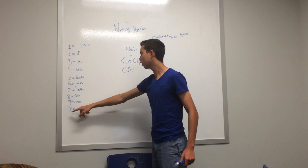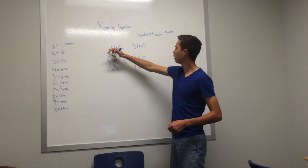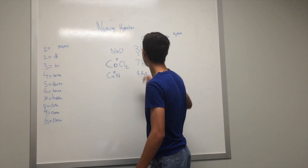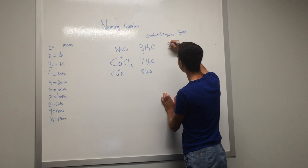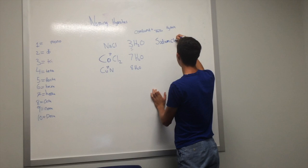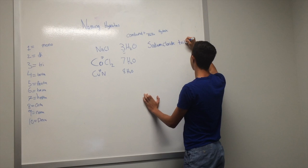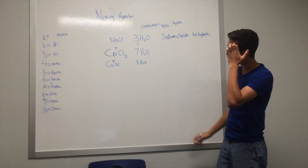We're going to do some examples. For example, here. Here's sodium chloride, 3, which is the prefix. 3 stands for tri, and then this will substitute hydrate. So it would be sodium chloride trihydrate. Let's do another example.